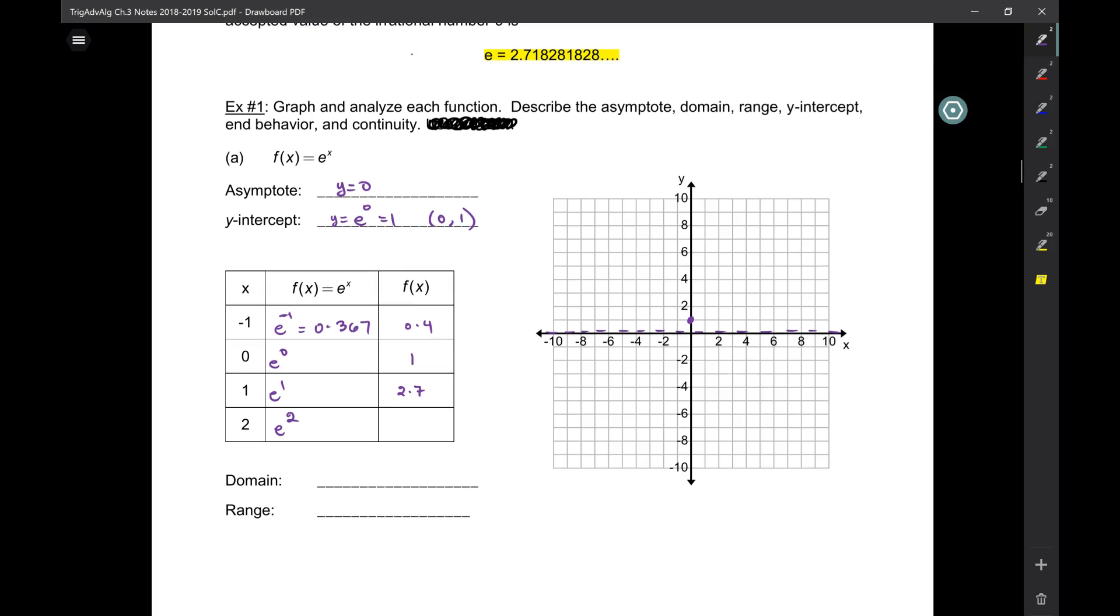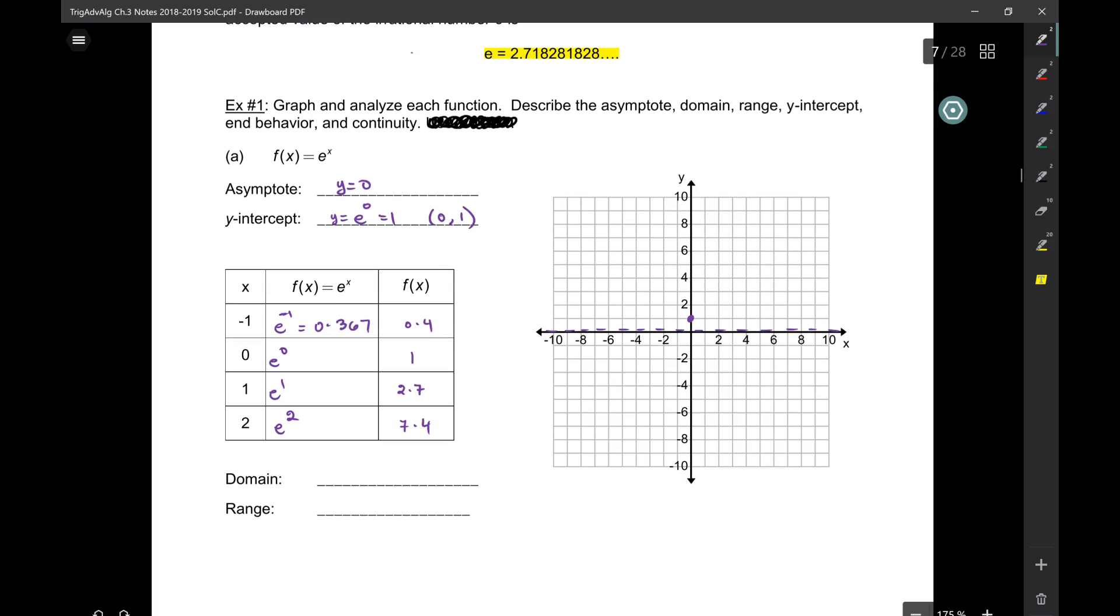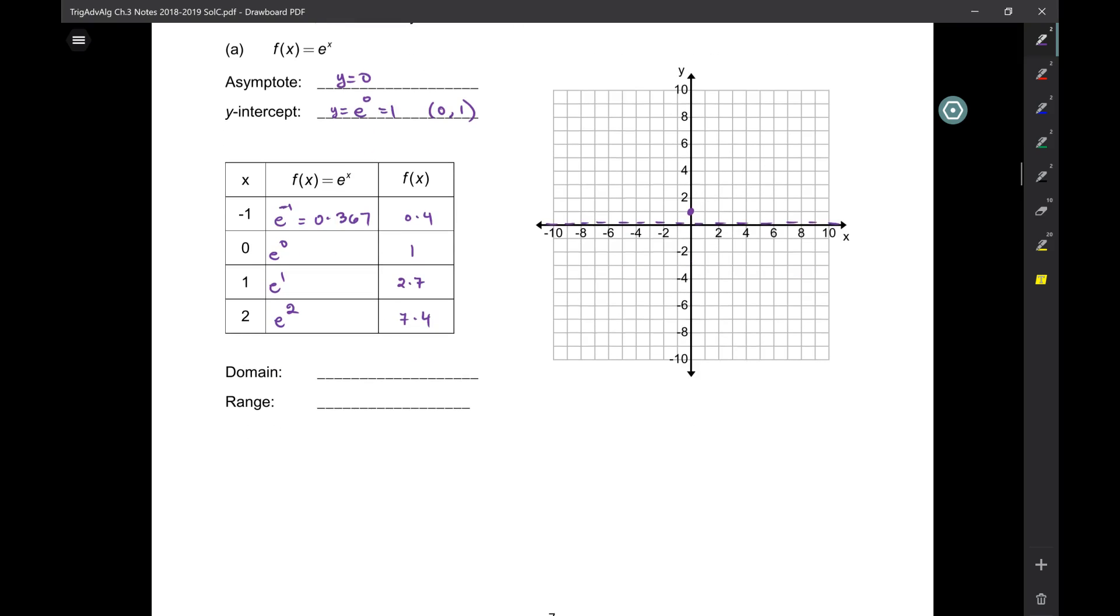Everybody knows e squared is just 7.4. If you're walking down the street and you get a tap on the shoulder, what's e squared? It's just 7.4. It's gonna make your life so much easier. What's the domain? This is an exponential function, all real numbers. And the range? Y is greater than zero.